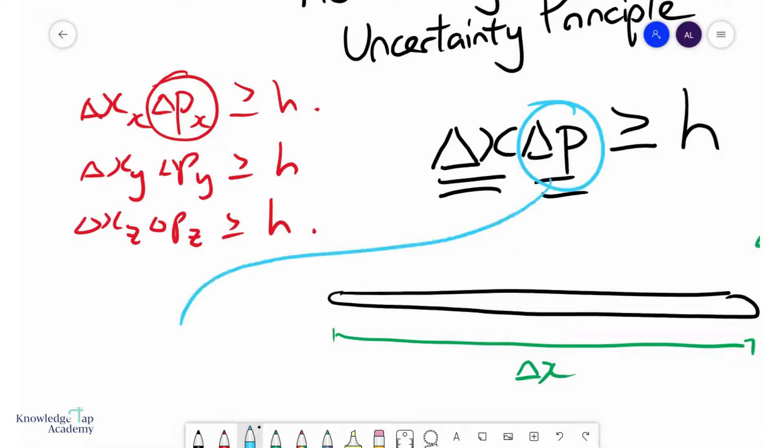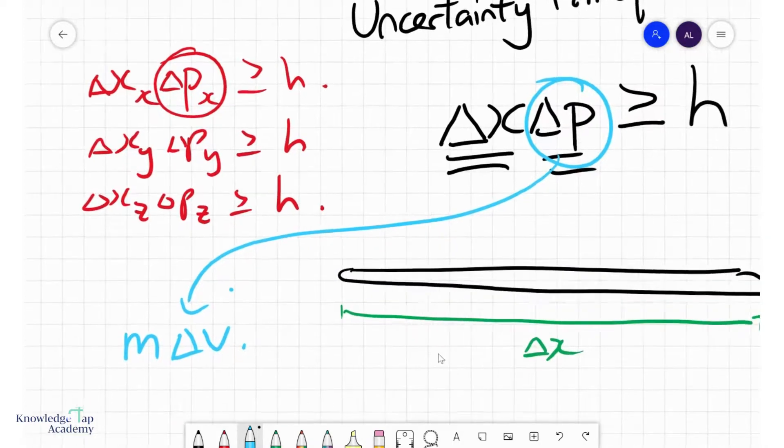And lastly, for the purposes of this exam, delta p usually is m delta v, implying that the uncertainty in the momentum comes about from the uncertainty in the velocity, not the mass of the particle.